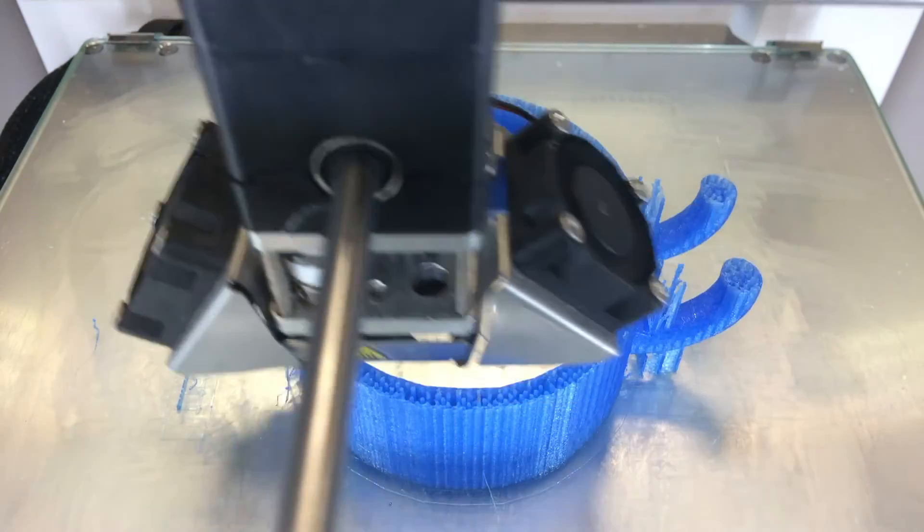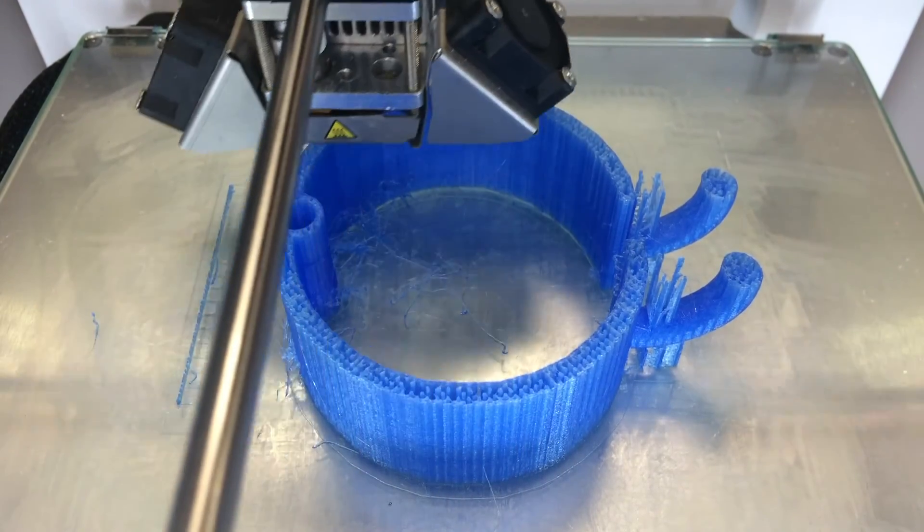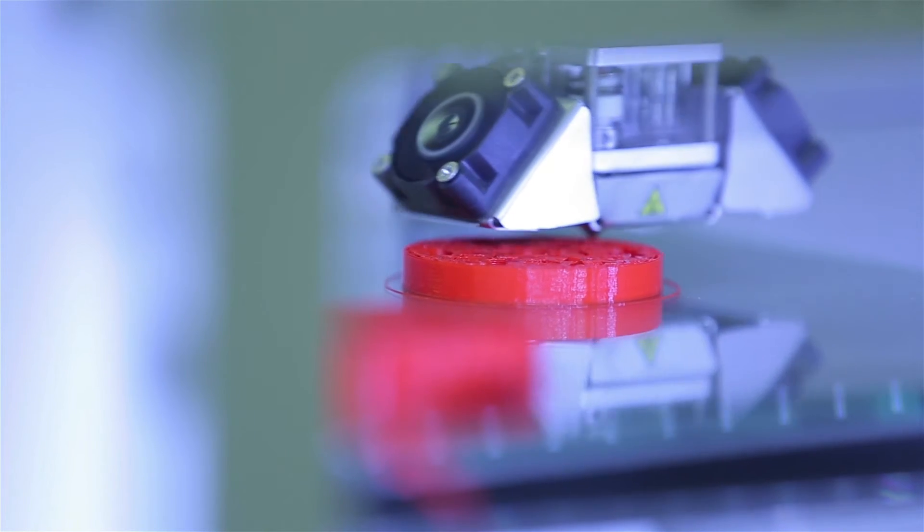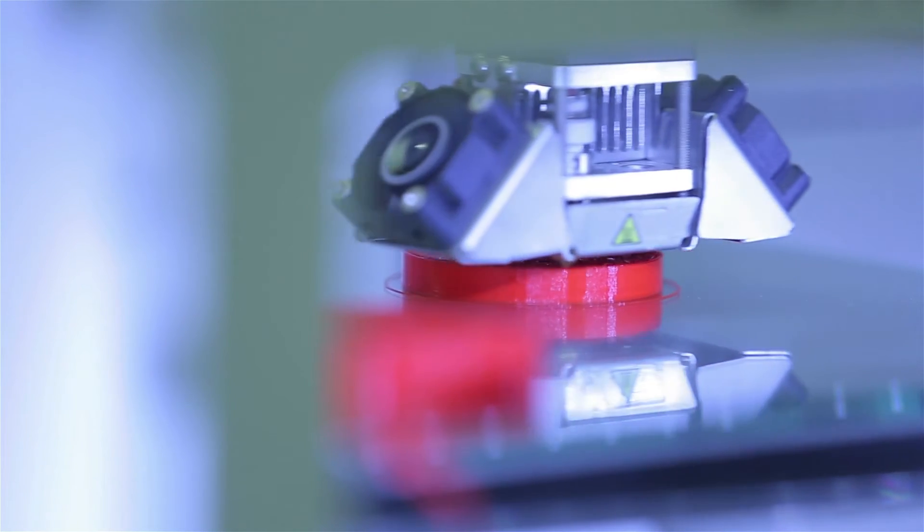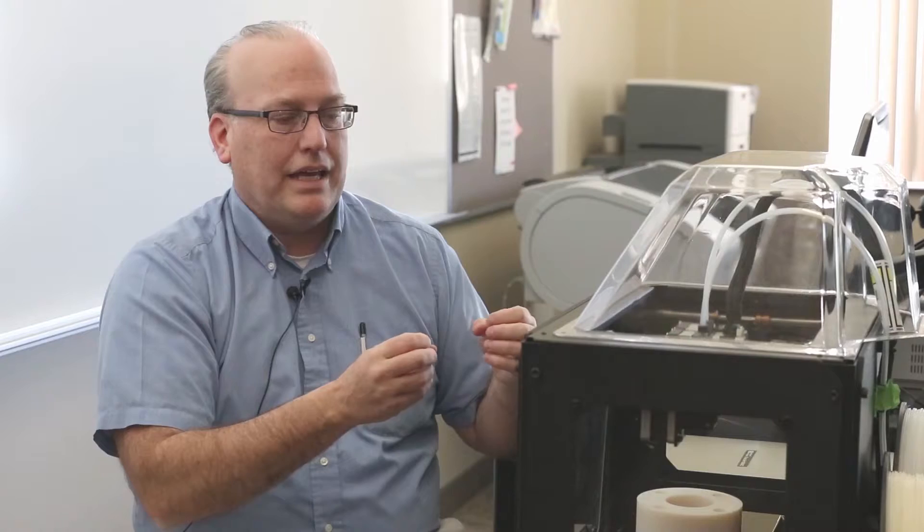The process to make a 3D printed model can be days, it can be hours to make a part or to make a final product. In my industry, we're talking 52 weeks to do that.